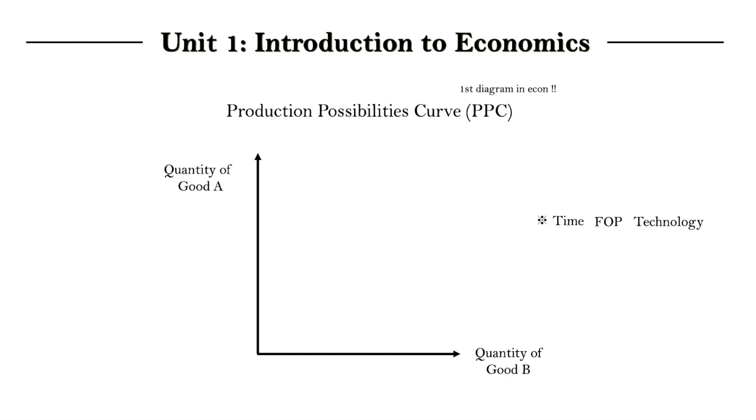And the reason we assume that the time, amount of resources, and technology are fixed is because these are things that can influence how much we can produce. And since the PPC is trying to illustrate a production possibility, how much we can produce through a static diagram, we need to keep these things constant, because if we don't, the diagram itself should also be changing.